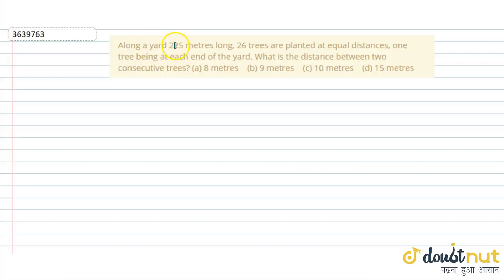The question given is: along a yard 225 meters long, 26 trees are planted at equal distances, one tree being at each end of the yard. What is the distance between two consecutive trees?